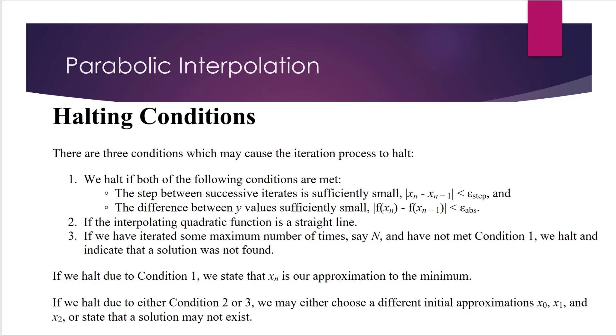Condition two is if the interpolating quadratic function is a straight line. It's possible that the three points we choose on the curve form a straight line. If that happens when we use the formula to find x_n based on the three previous initial guesses, you will get a zero as the denominator.